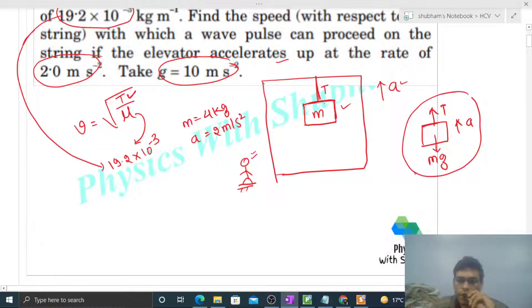Now F = ma, which means tension minus mg (the net force) equals mass times acceleration. So from here, the tension will be m(g + a).